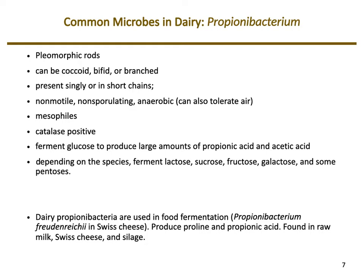Propionibacteria are rod-shaped, found individually or in short chains, non-motile, non-endospore-forming, and anaerobic but tolerant to air. They are mesophiles and catalase-positive. They ferment glucose and in the process produce propionic acid — hence their name — and acetic acid. Both propionic and acetic acid can change the flavor profile of the dairy product. Propionibacteria are inoculated into Swiss cheese, where propionic acid gives it that characteristic bitter taste. Depending on the species, they can also ferment lactose, sucrose, fructose, and galactose.